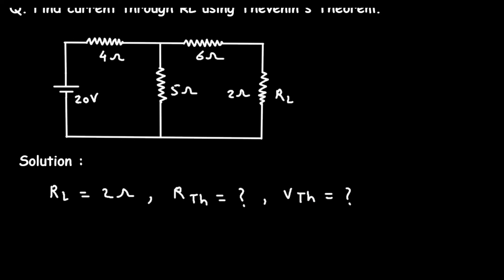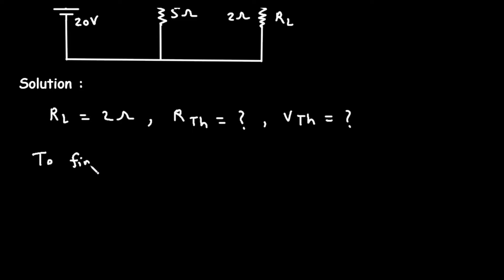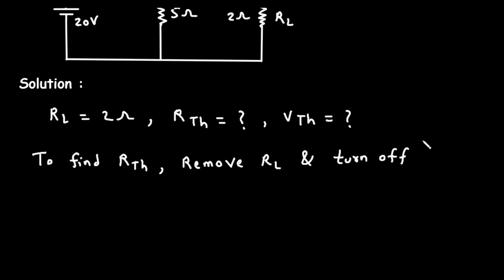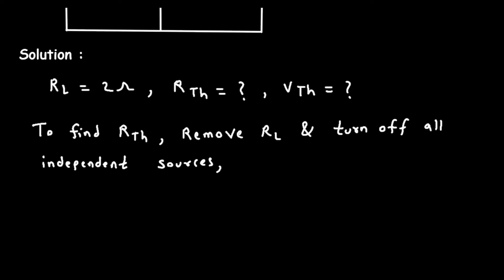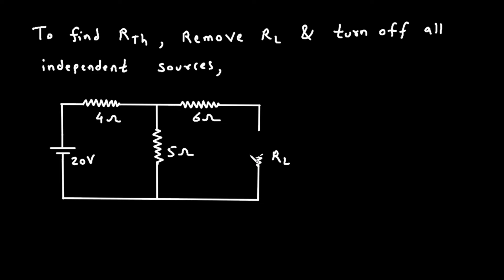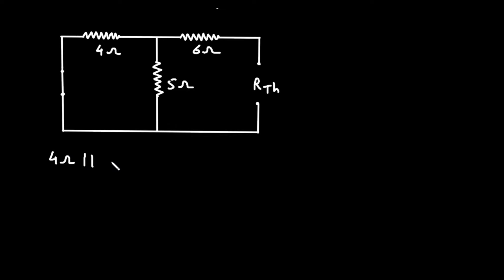First, let's find the value of RTH. To find RTH, we will remove RL and turn off all independent sources. So let's remove RL. When we turn off the voltage source, it will be replaced by a short circuit. Now here we can see this 4 ohm and 5 ohm are connected in parallel.